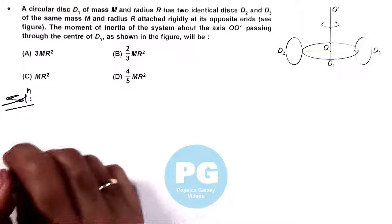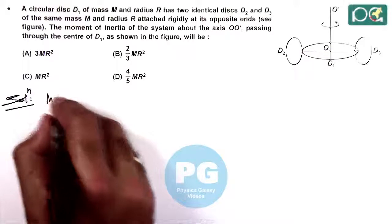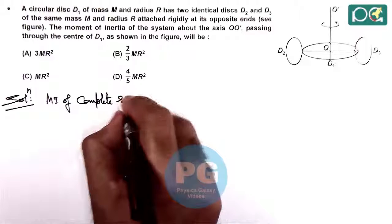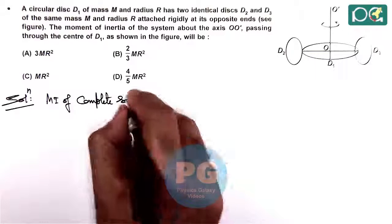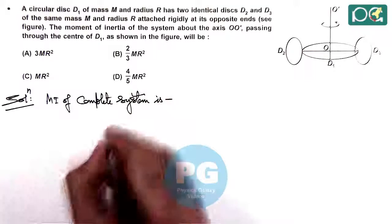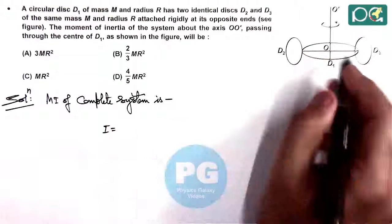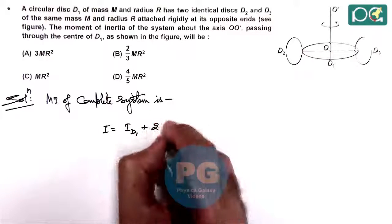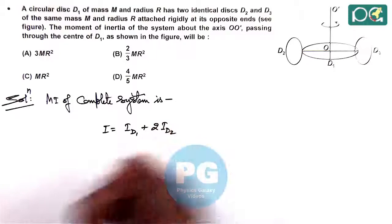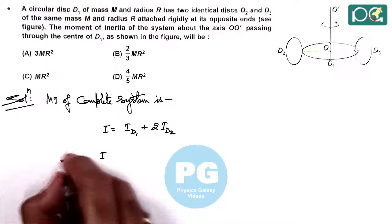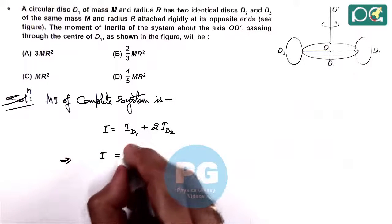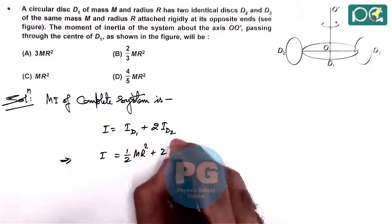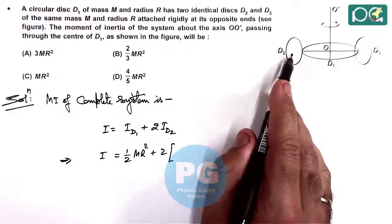we can see the moment of inertia of complete system is, the moment of inertia we can write for the central disk, it is I of D1 plus twice of I of D2. So moment of inertia of disk D1 we can simply write as half MR² plus twice of the moment of inertia of D2.